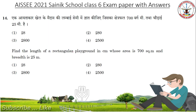Find the length of the rectangular playground in cm whose area is 700 square meters and the breadth is 25 meters. You need to find the length of a rectangle in cm. Answer is 2800.